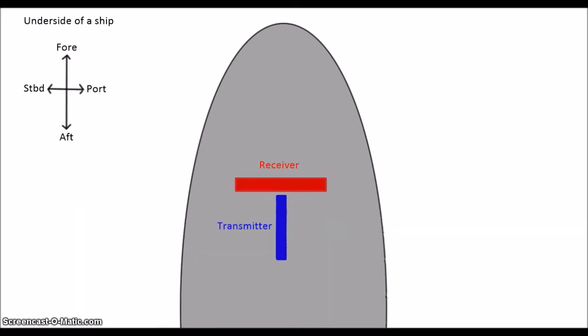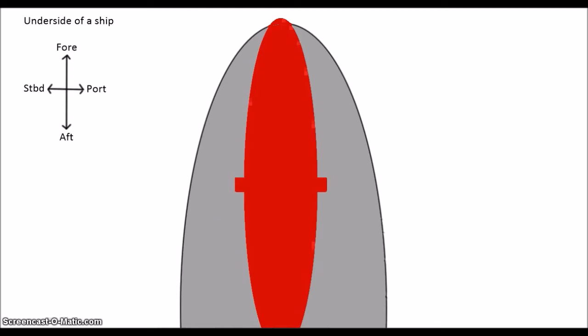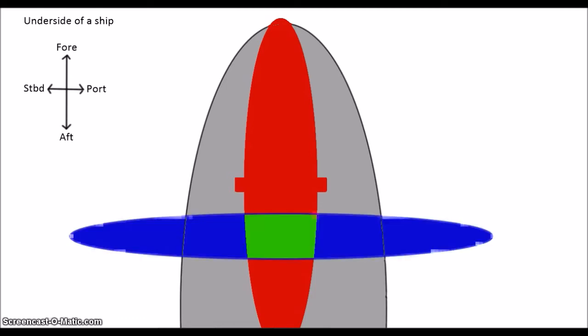The receiver is a bit more complicated. Just like how the transmitter is aligned to send out a wide pulse in the across-track direction, the receiver is an array of elements aligned to receive a wide pulse in the fore-aft direction. What you find is that the sonar is able to see only the intersection of these two areas. That intersection is basically a beam received at the receiver, pointed straight down, much like single-beam sonar.